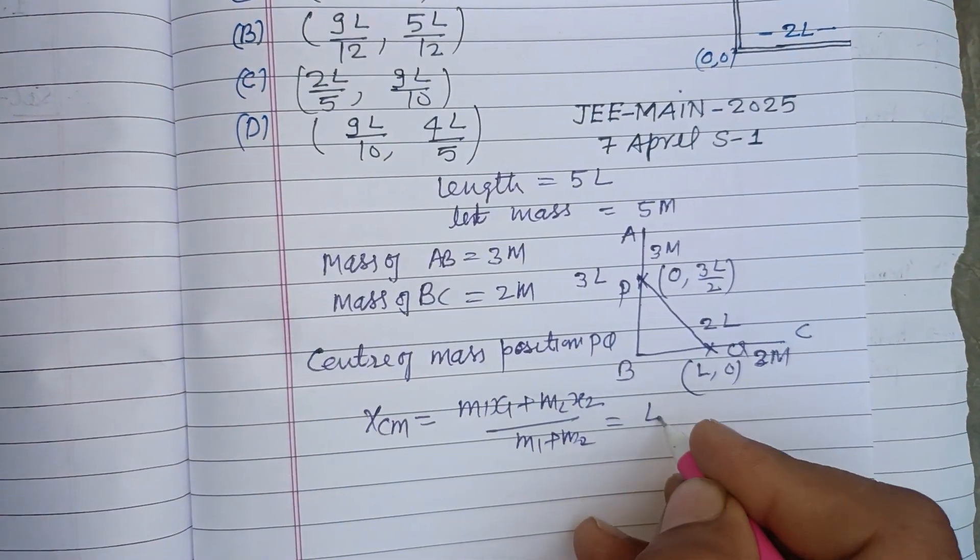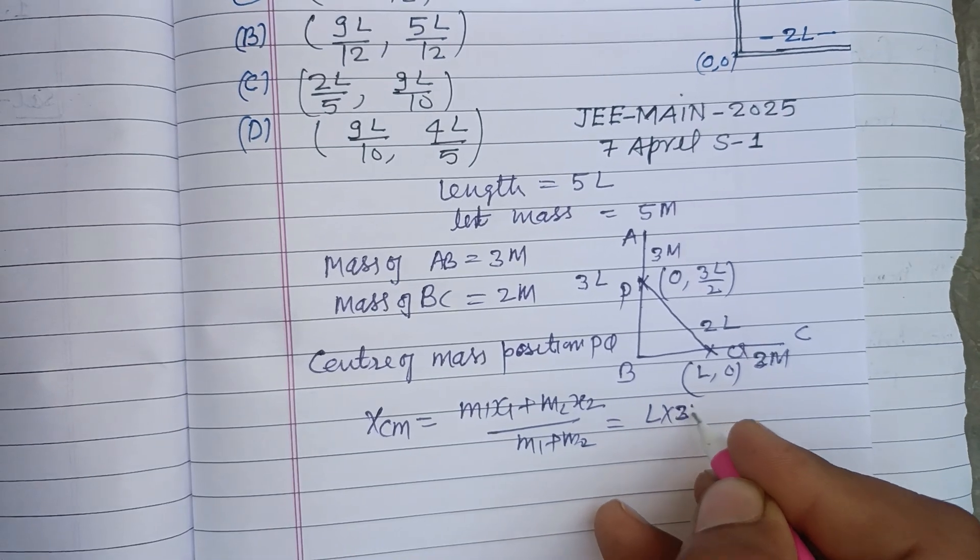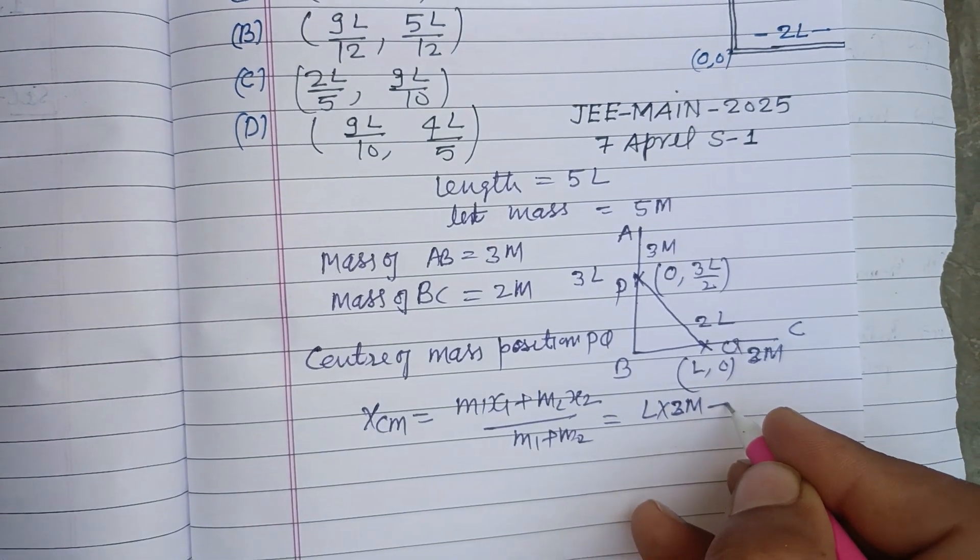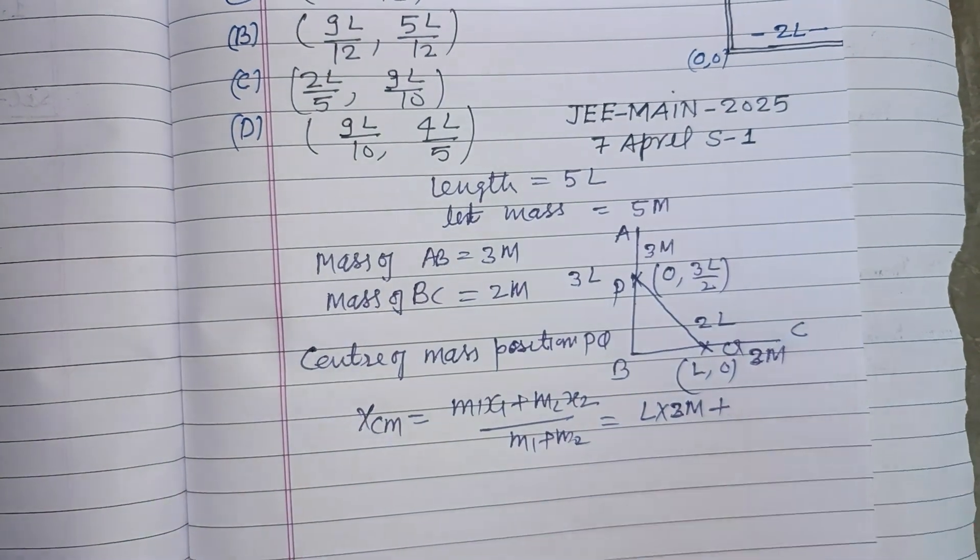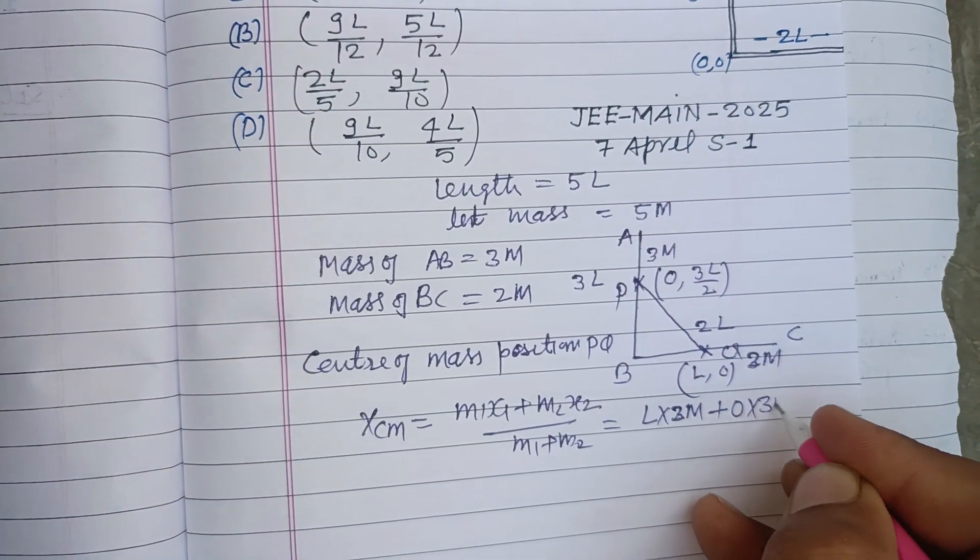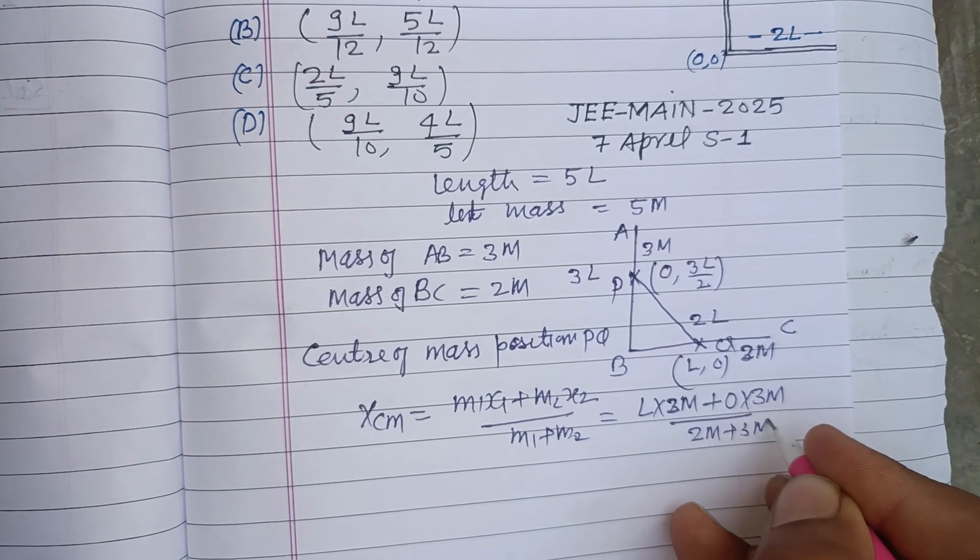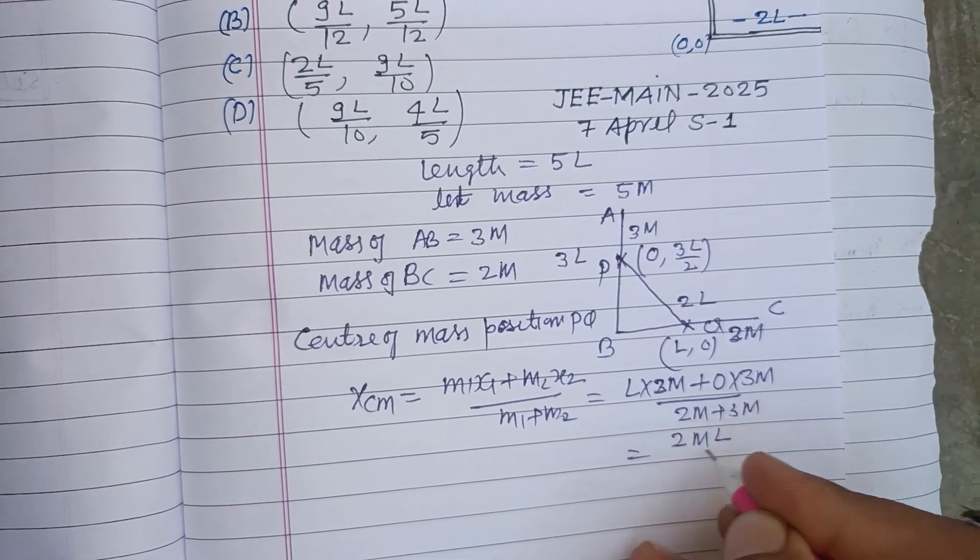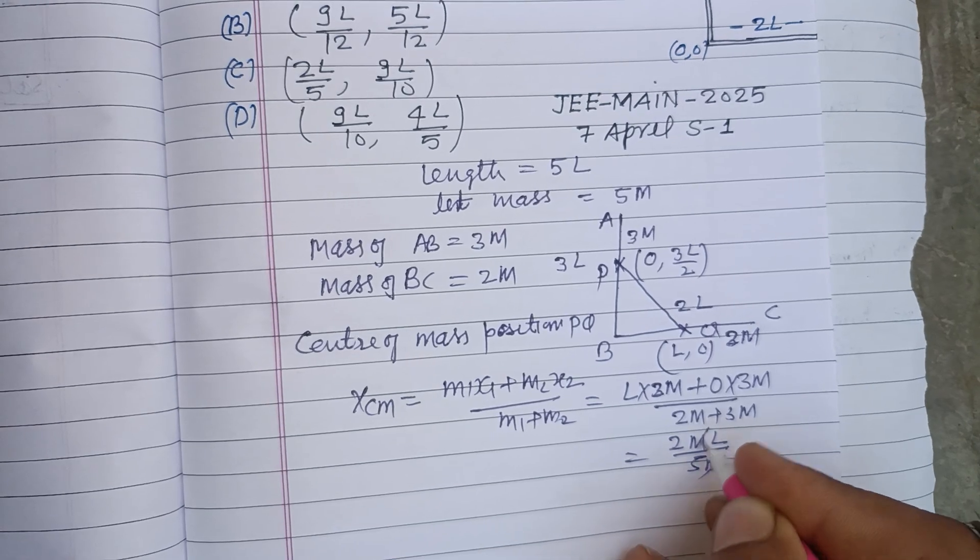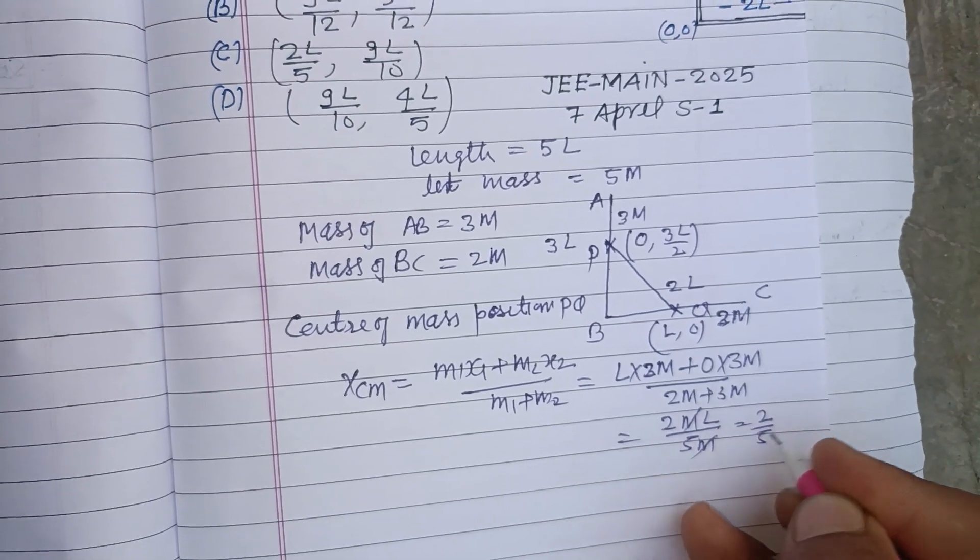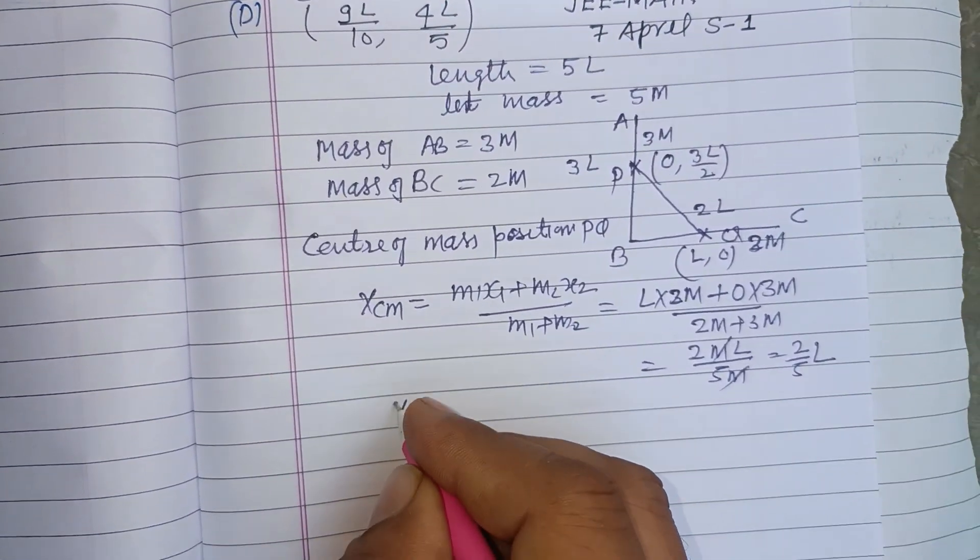X center of mass is m1 x1 plus m2 x2 over m1 plus m2. And that is L times M, L upon 5M, M cancels, 2 upon 5, L upon 5.